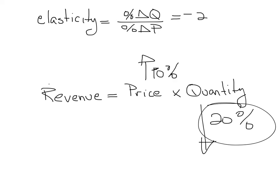Again, since the quantity sold is going down by more than the increase in price, total revenue, which is price times quantity, will also go down.